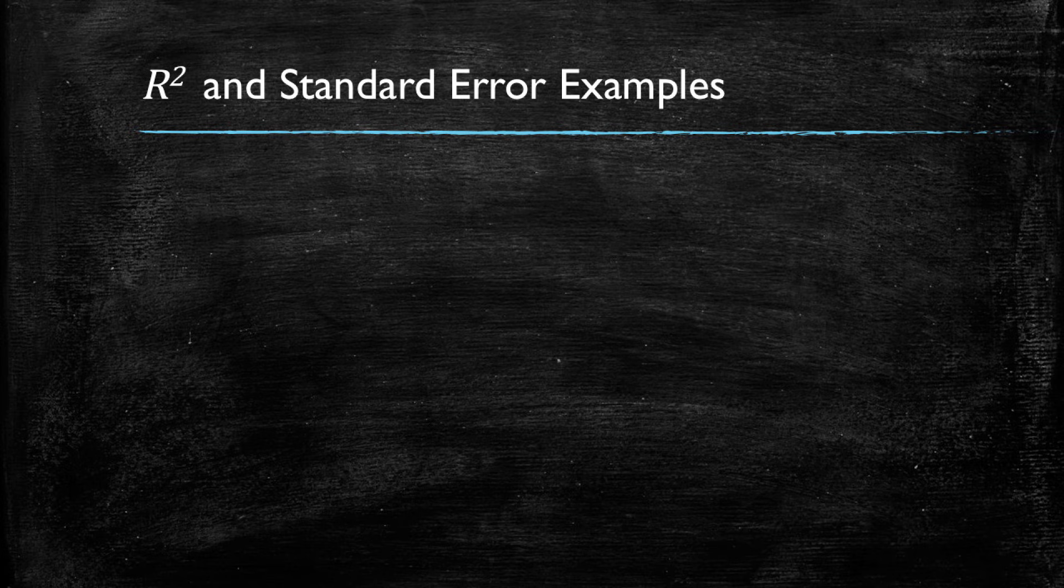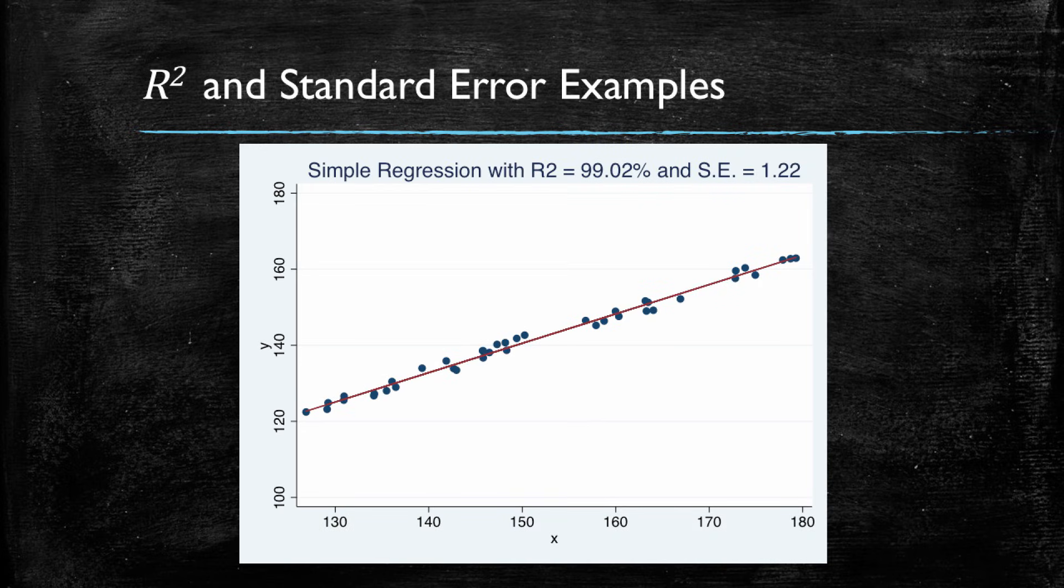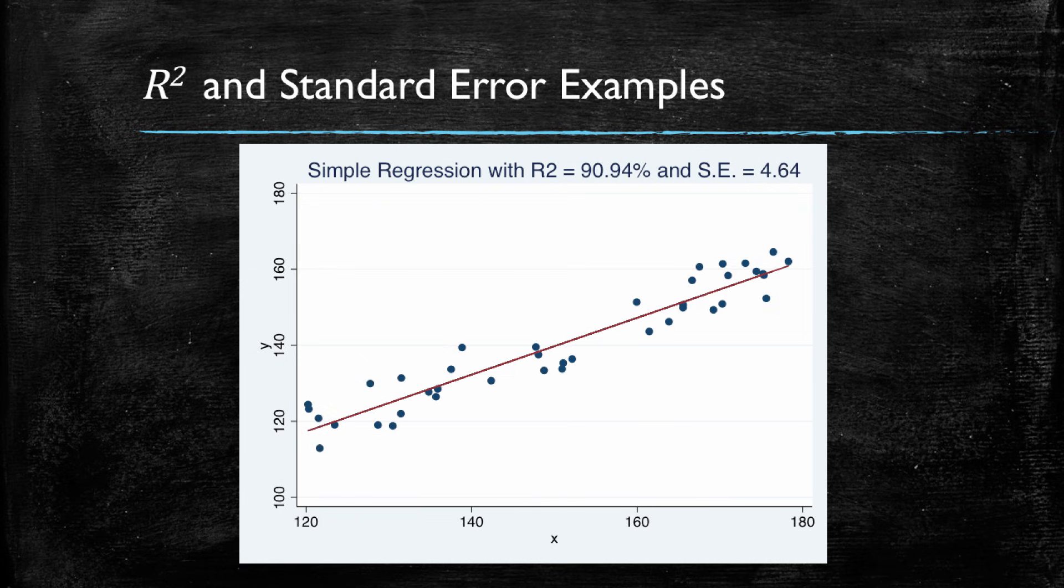Let's now look at the examples we had before. But in addition to reporting the R squared, let's report the standard error, which I show in the upper right corner of the plots. This was the model with a very high R squared, and it has a very low standard error of 1.22.